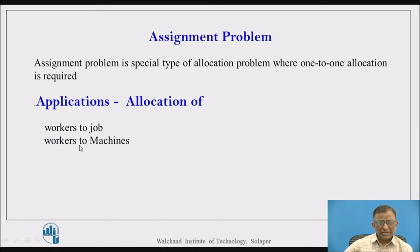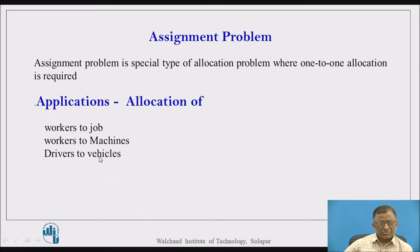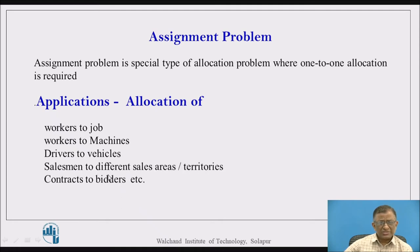A similar area is allocating workers to different machines. Workers may be skilled on some machines and their efficiency will naturally be higher. Considering the efficiency of each worker on different machines, they should be properly allocated so that total efficiency is maximum. Other major areas include drivers to vehicles, salesmen to sales territories, and contracts to bidders — all requiring one-to-one allocation that can be formulated and solved as an assignment problem using assignment technique.